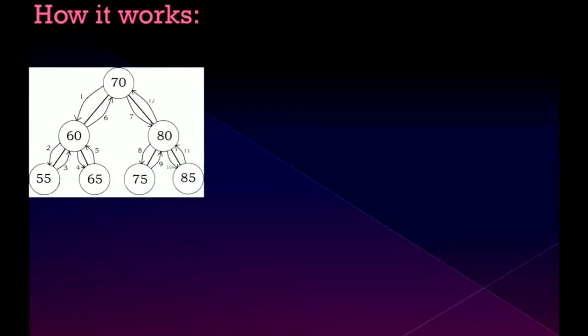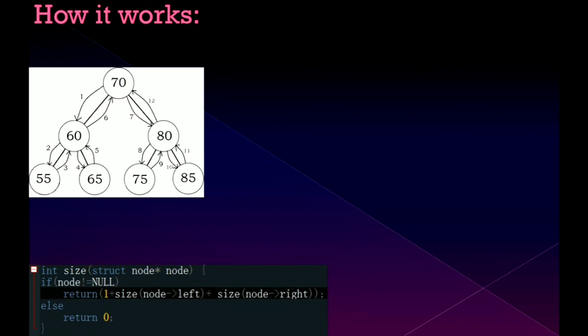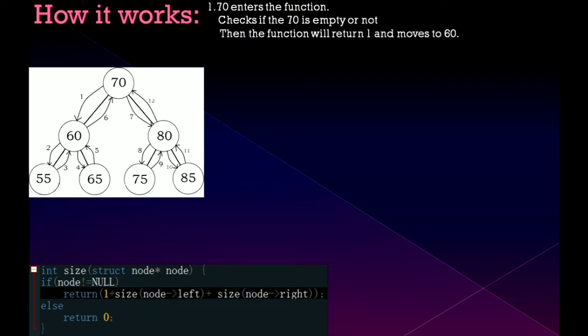Let us understand how the algorithm works. If you look at the picture of the binary tree, there are some numbers which can be understandable within a minute and this is our code. First, 70 enters the function. It will check if 70 is empty or not. As you can see 70 is not empty. Then the function will return 1 and move to the size node to left which is size of 60.